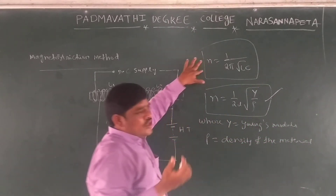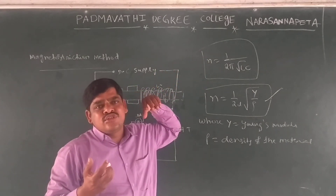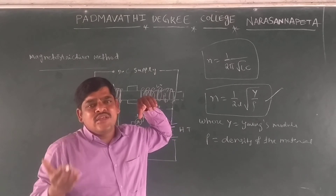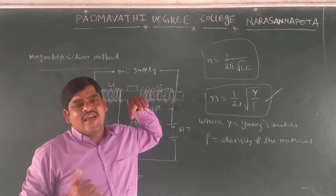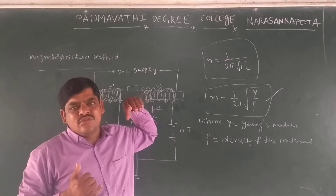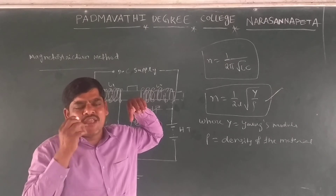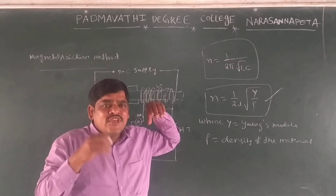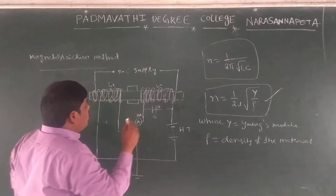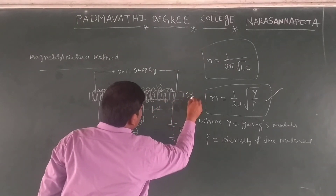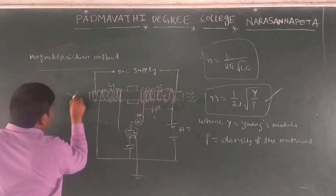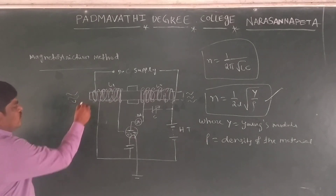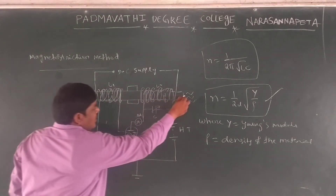When the resonance occurs, the metal rod vibrates with maximum amplitude. Due to resonance, it produces ultrasonic waves at the ends of the metal rod.